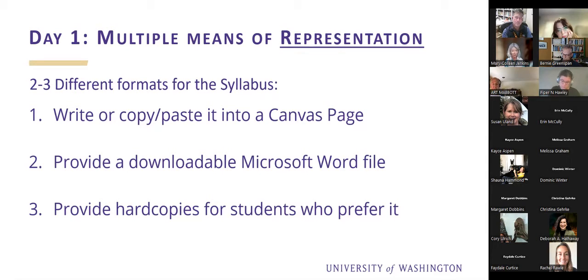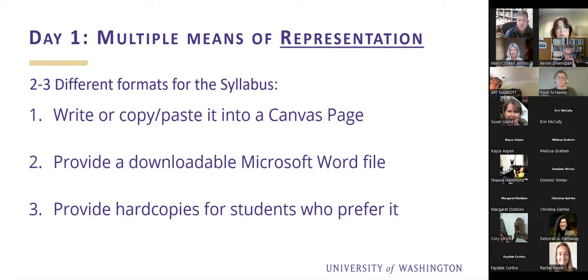Canvas has great accessibility features and accessibility checkers that give you guidance and show how accessible your pages are. Providing a downloadable Word file lets students customize it: take notes, add their own early deadlines, highlight things. Students who need to work ahead or are very organized can manage their own schedule within the document. Hard copies — people just like them sometimes. Those are multiple means of representation just for the syllabus alone. It may not make them read it more deeply, but it makes it easier for them to use.